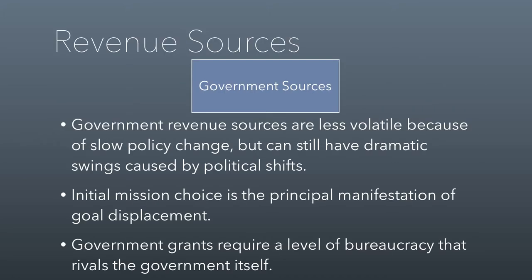Let's move on to government sources. Government revenue sources are less volatile generally because of slow policy change, but political shifts can cause temporary high volatility. For example, if a new administration is elected or there's a big shift in Congress, new programs are started. However, a lot of government programs, once started, tend to be pretty stable sources of revenue. The last few years have kind of bucked this trend with a lot of budget cutting that hasn't happened historically. For example, if you relied heavily on AmeriCorps volunteers, a lot of AmeriCorps funding dried up during the last few years. It reflects this idea of general stability with temporary bouts of volatility.